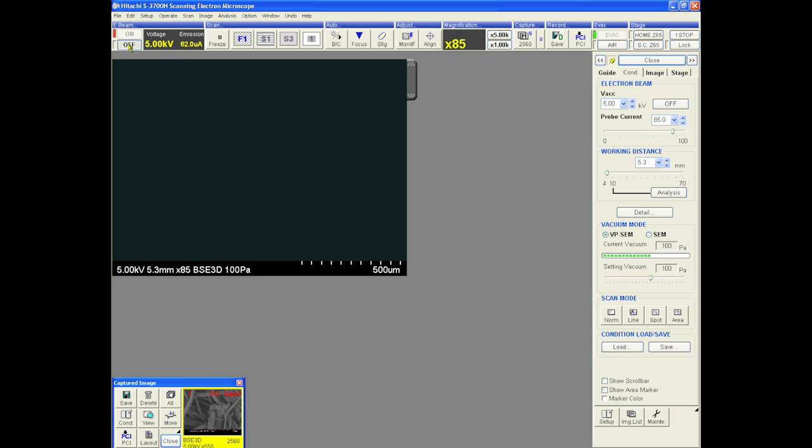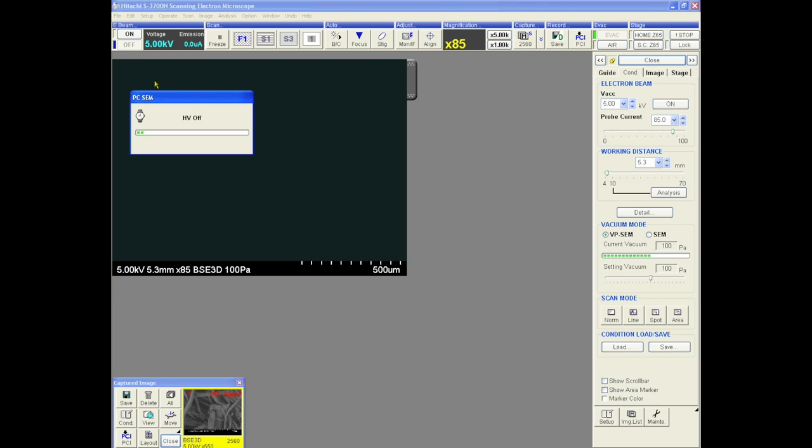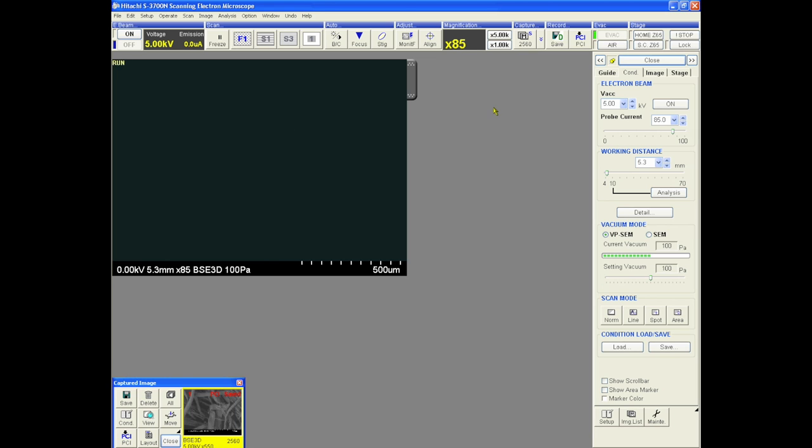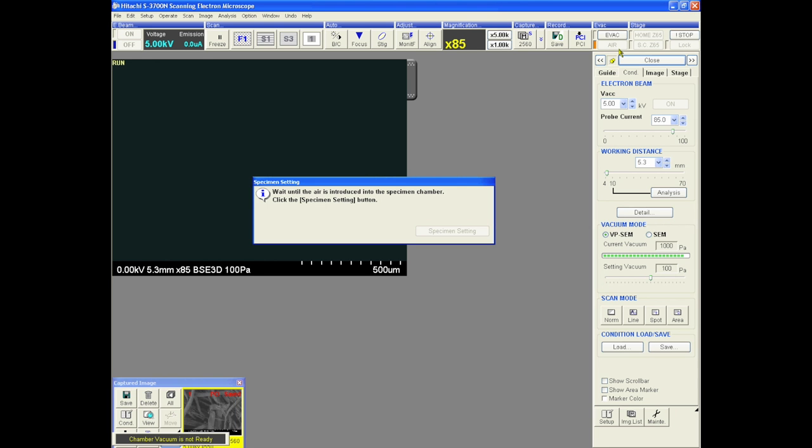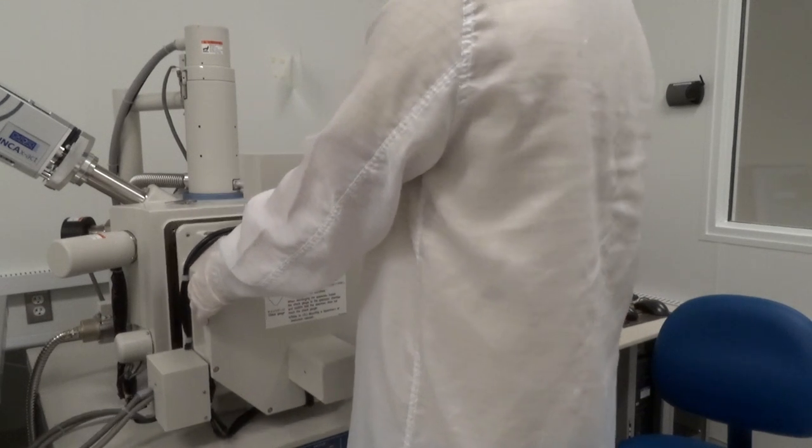When you are finished capturing images, turn off the E-beam, set the sample to home Z65, and vent the chamber. Once the chamber is vented, remove the sample and pump the chamber back down. Keeping the chamber under vacuum prevents moisture and debris from building up inside the chamber. Once the chamber is evacuated, you may leave and continue on with your day.